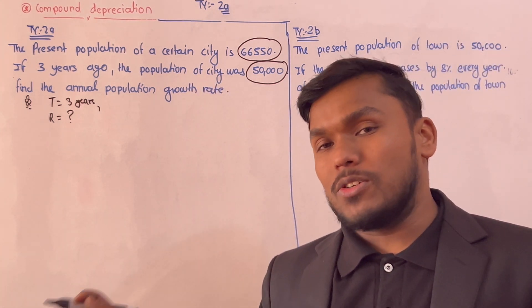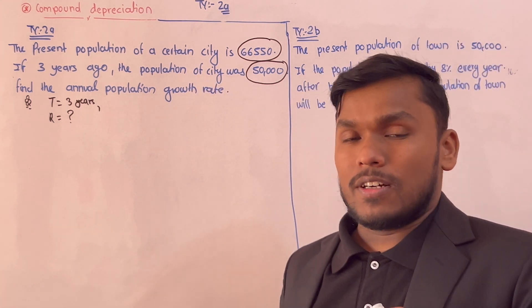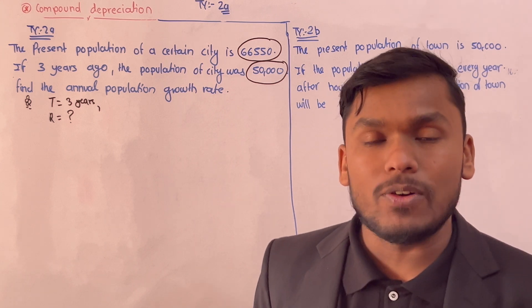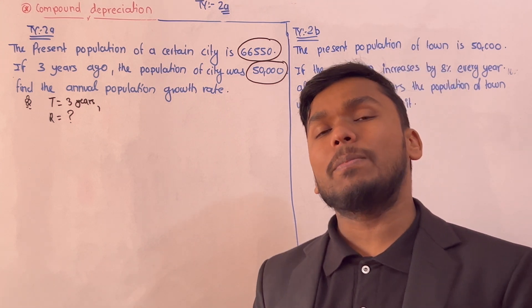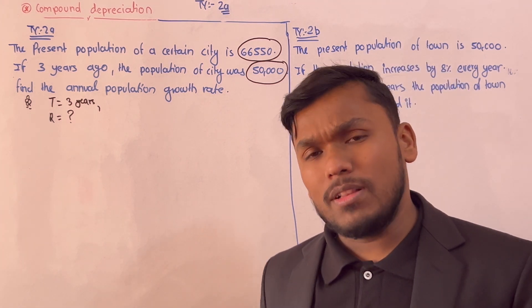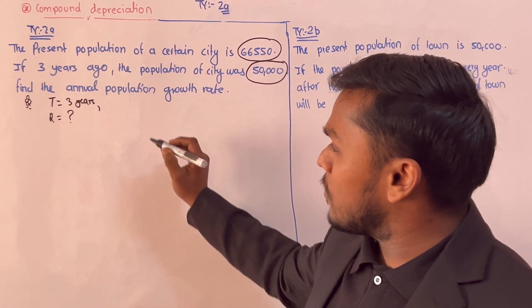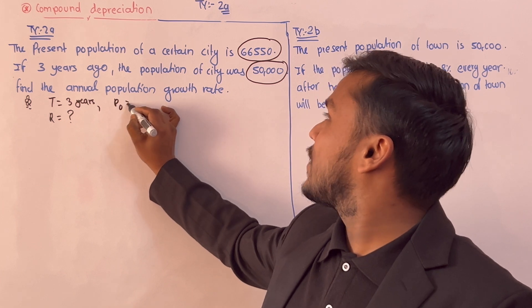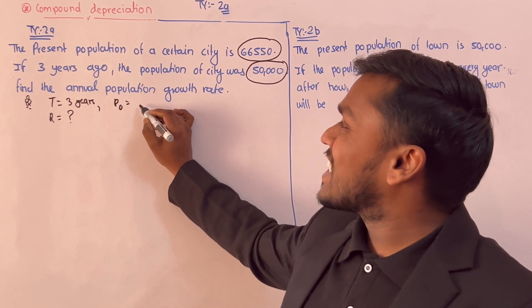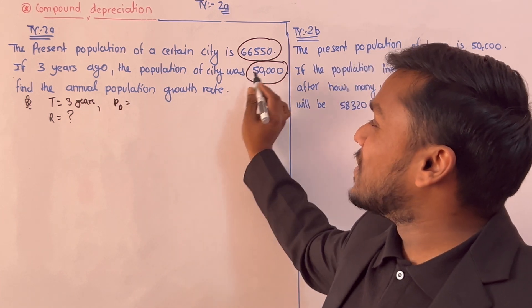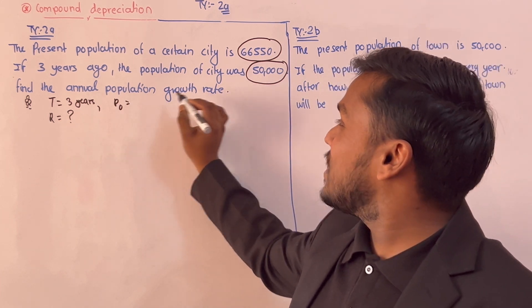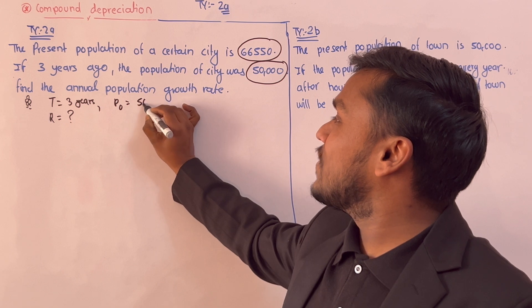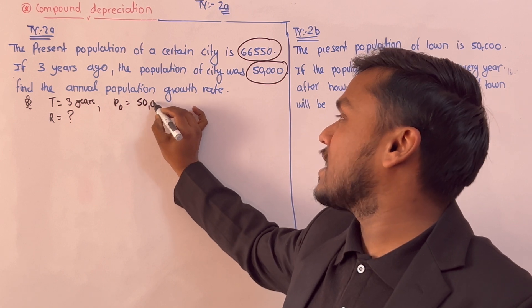Looking at the values: P0 equals 50,000 and Pt equals 66,550.